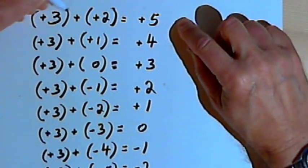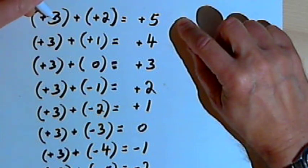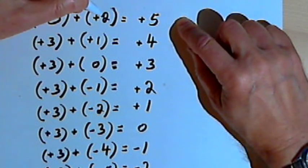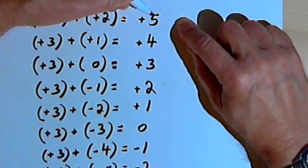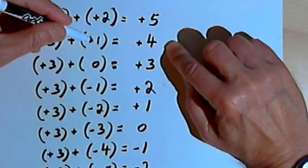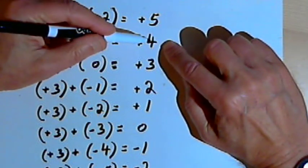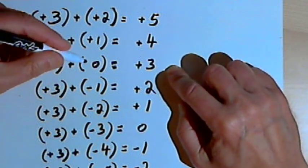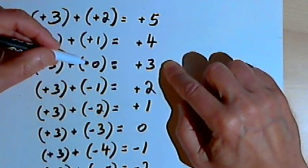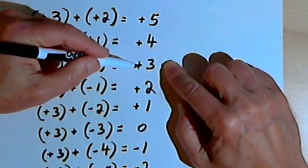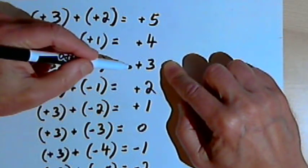When I add positive 3 and positive 2, I get positive 5. So adding two positive numbers together, I'm going to end up with a positive number. The same thing happens with positive 3 and positive 1 — I end up with positive 4. Then positive 3 plus 0: adding 0 to a number doesn't change it at all, so I'll still have positive 3.